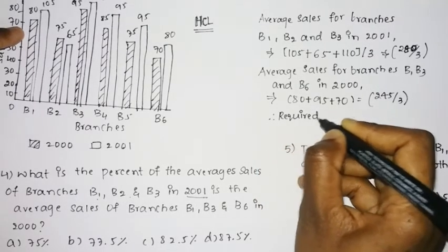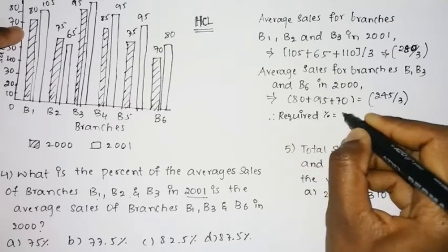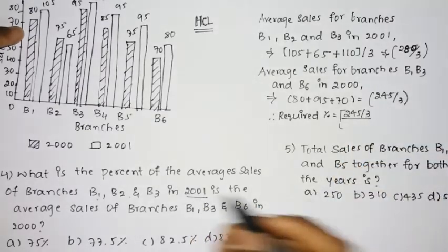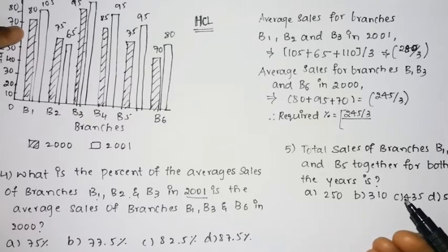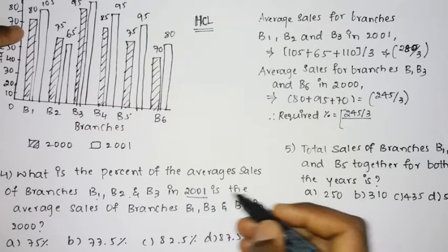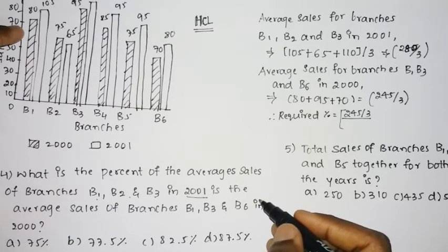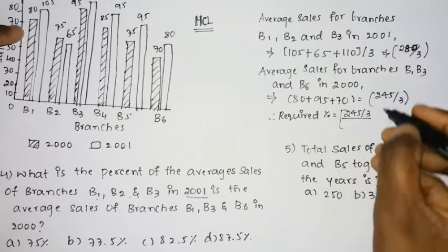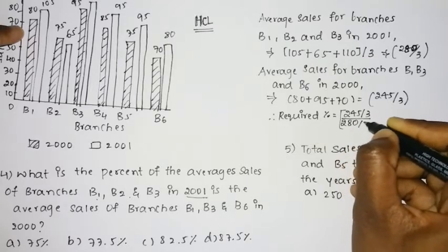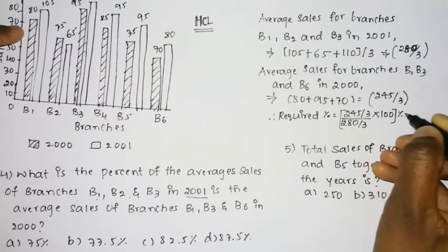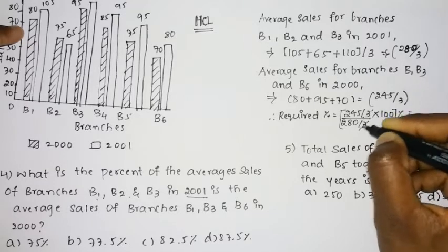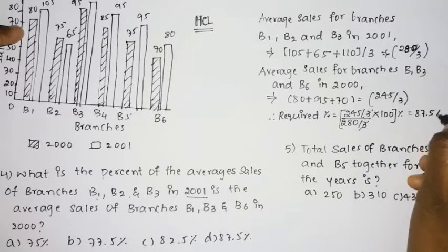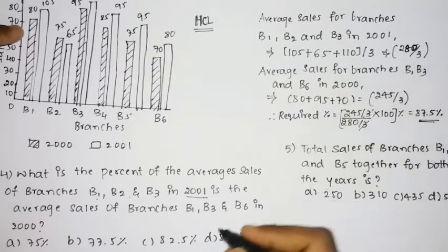Now we find the required percentage. The average sales of B1, B2, and B3 in 2001 is 245 divided by 3, and the average sales of B1, B3, and B6 in 2000 is 280 divided by 3. The 3s cancel, so we get 245 divided by 280 into 100, which equals 87.5%. So option D is the correct answer for this question.